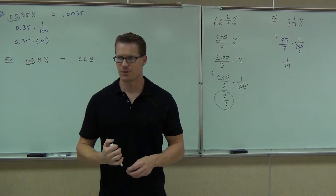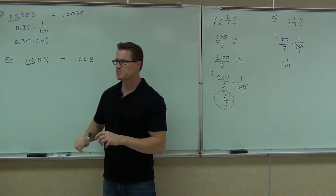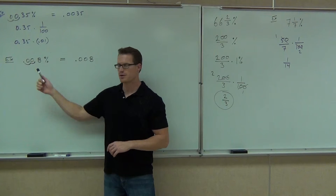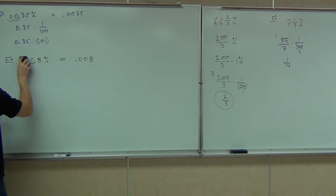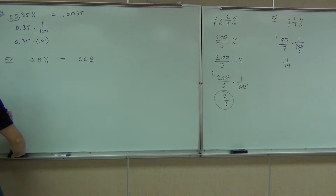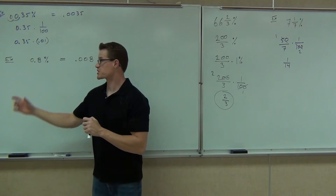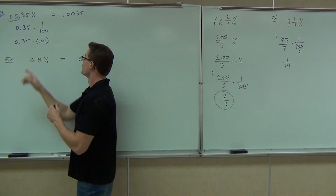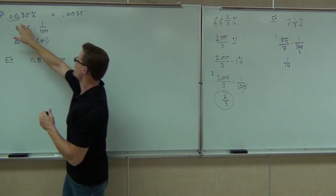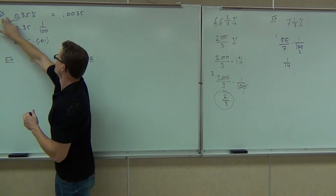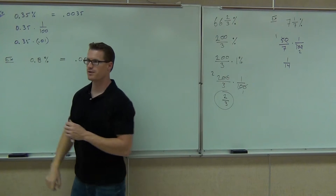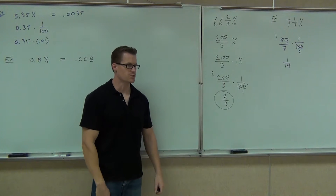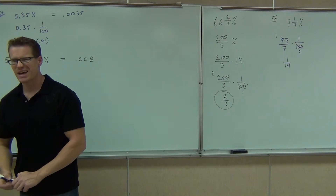Here's one way you can think of it: the decimal equivalent should look like a smaller number than what you started with. For instance, we started with 0.08, right? The percentage should look bigger than this. The decimal should look smaller than that one. Same thing with here — 0.0035 looks smaller than 0.35. You with me? 0.19 looks smaller than 19%.